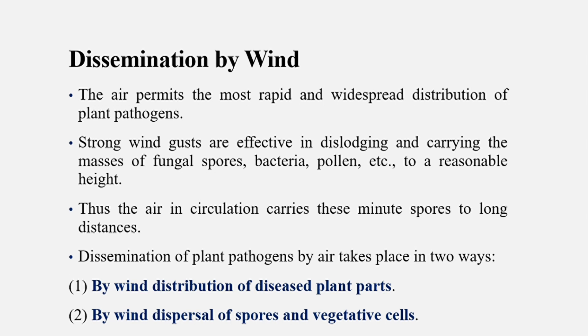Dissemination of plant pathogens by air takes place in two ways: first, the wind distribution of diseased plant parts, and second, the wind dispersion of spores and vegetative cells.